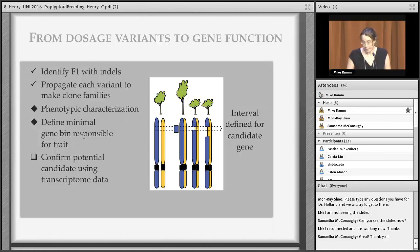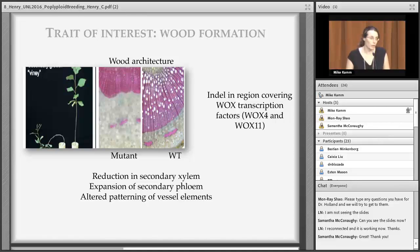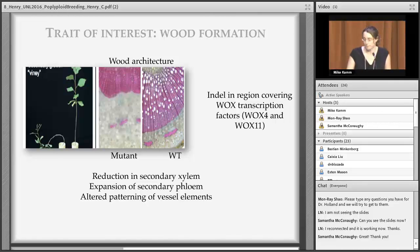We also have very interesting wood phenotypes, including 'viney' phenotypes we are very interested in. We have very consistent results from the same clones and genotypes, which is encouraging. We will obtain transcriptome data in the spring and correlate it with dosage and phenotypic information. One viney mutant has very interesting wood architecture, and the lesion in those trees spans a genomic region containing two transcription factors — WOX4 and WOX11 — known to be involved in wood formation.